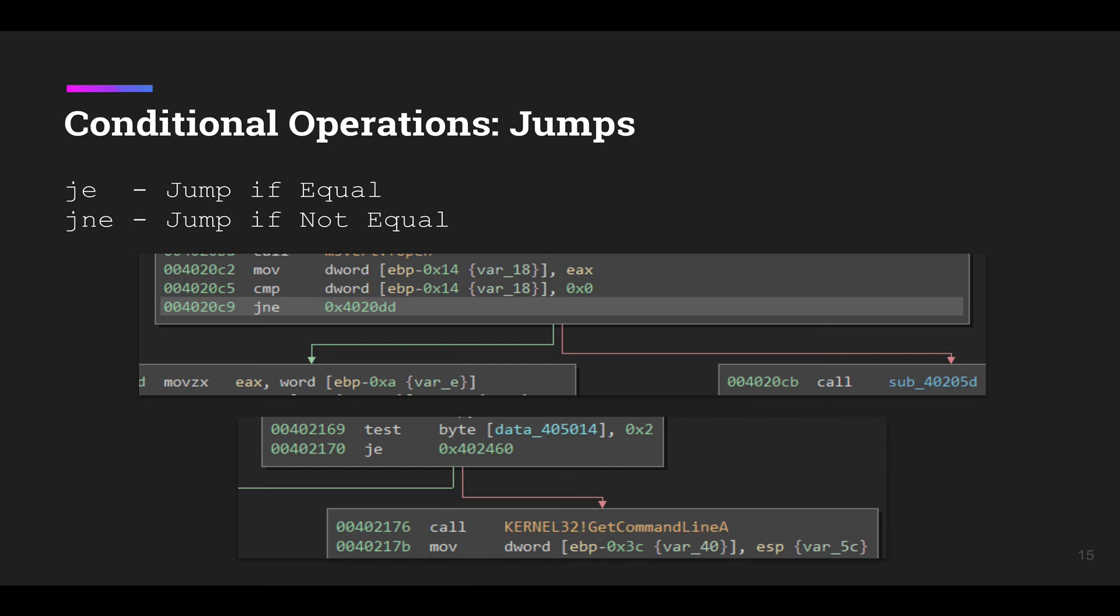The test instruction on the bottom just goes to this location and gets one byte from that memory address. If that one byte is equal to two, it's going to branch to the left to the green path. If it's not to anything else at all, it's going to go to the right or this red path.